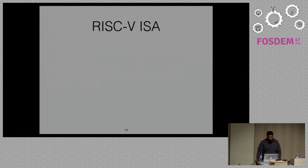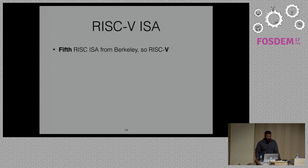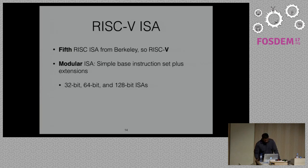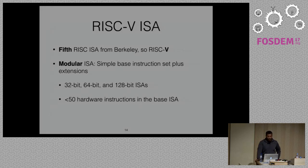RISC-V is the fifth RISC ISA from Berkeley — hence the Roman numeral V. The nice thing about RISC-V is it's a modular ISA with a simple base instruction set, and you can layer extensions on top. It has a base-plus-extension model. There are 32-bit, 64-bit, and 128-bit versions — yes, 128-bit, because data center people are interested in that. The base ISA has fewer than 50 hardware instructions, making it feasible to implement microcontrollers in really small cores.